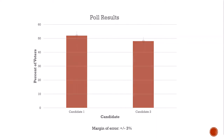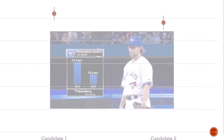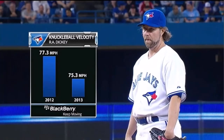So if we re-plot the results to show both the estimate and the margin of error, we can see that the results overlap, effectively telling us that as far as our poll can determine, this election is a toss-up. This example seems to show R.A. Dickey's knuckleball velocity decreasing by 50% since his previous season. In reality, a truncated y-axis exaggerates an actual change of only 2 miles per hour, or 2.5%.